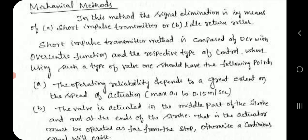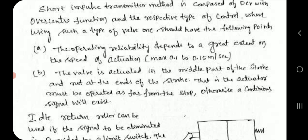When using such a type of valve, one should have some points: The operating reliability depends to a great extent on the speed of actuation, maximum 0.1 to 0.15 meters per second.